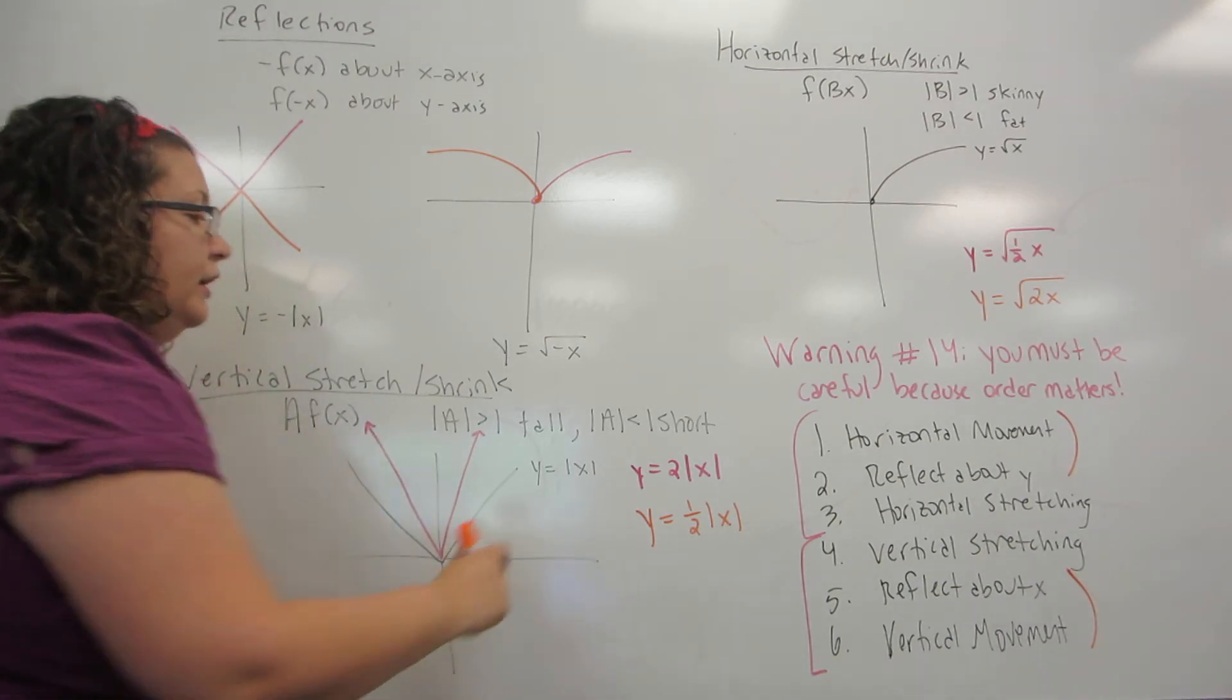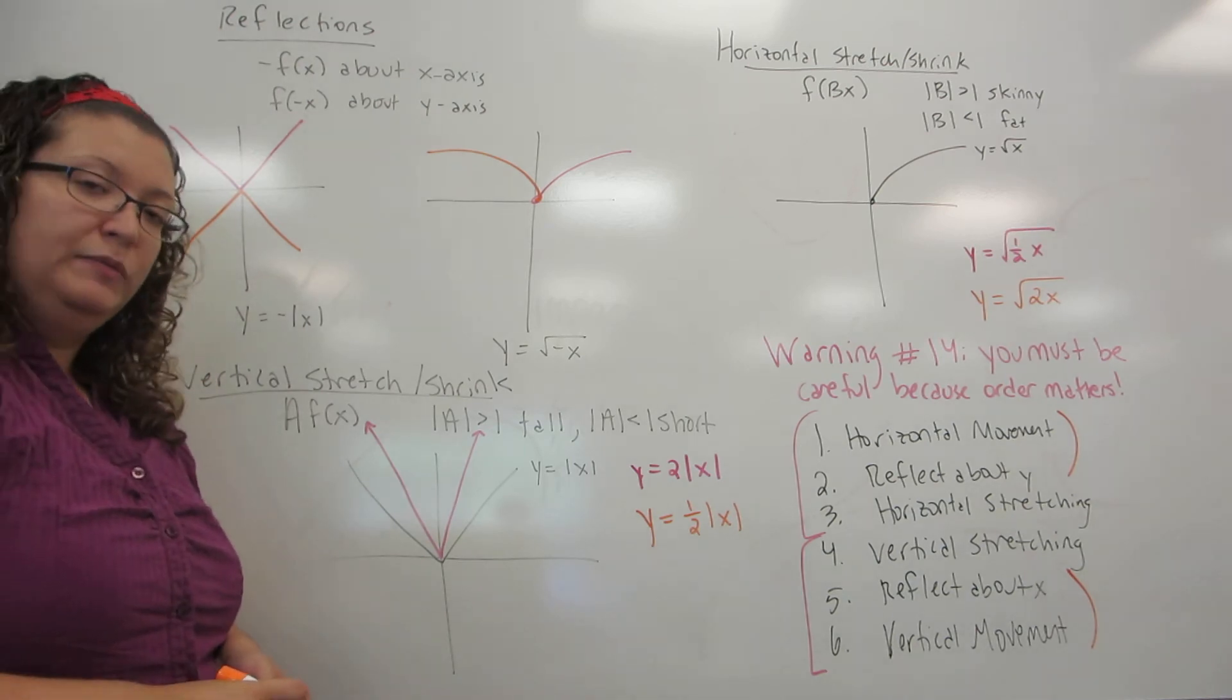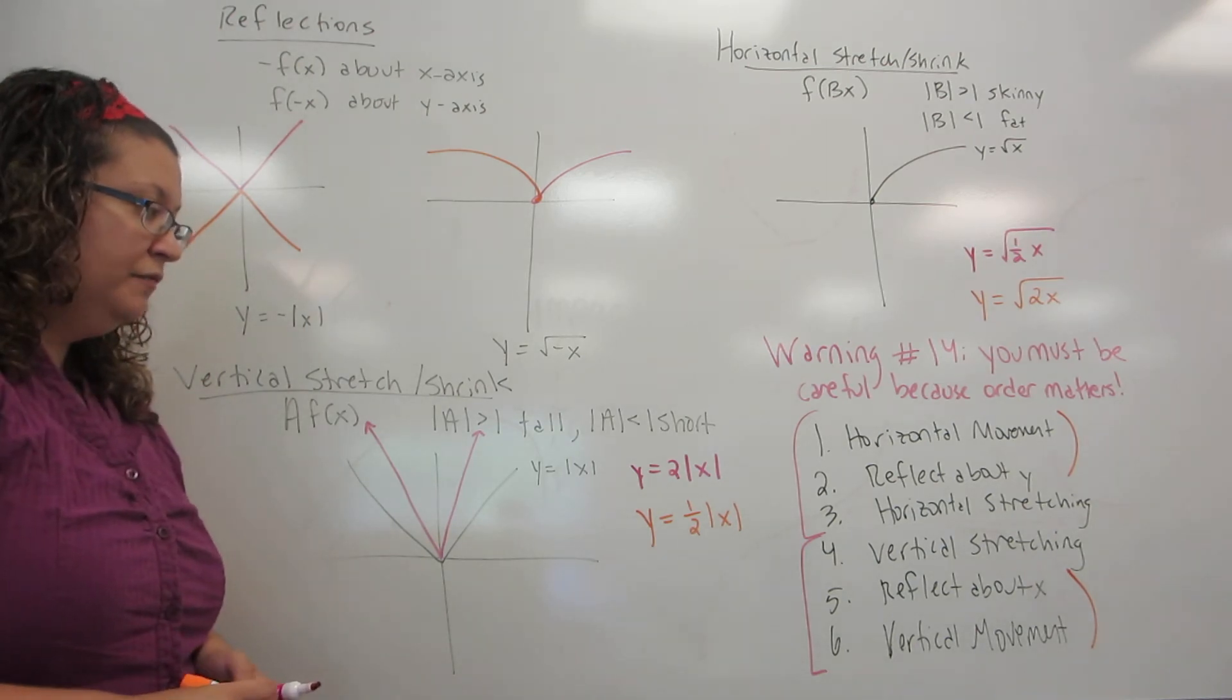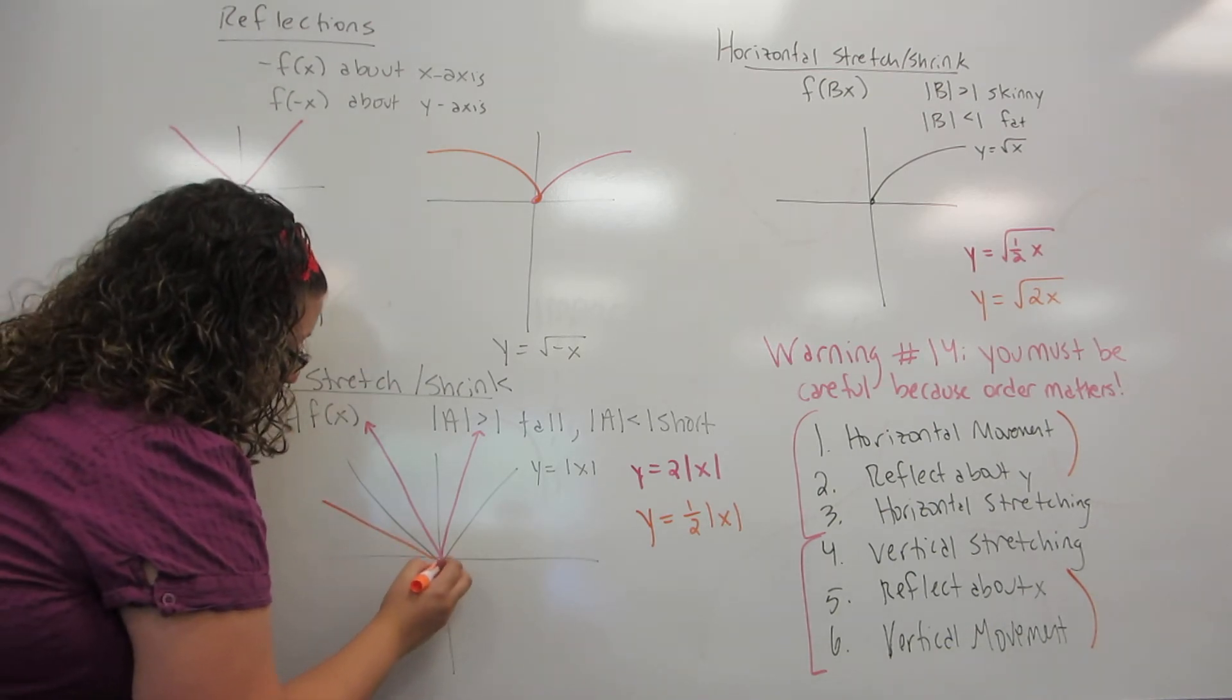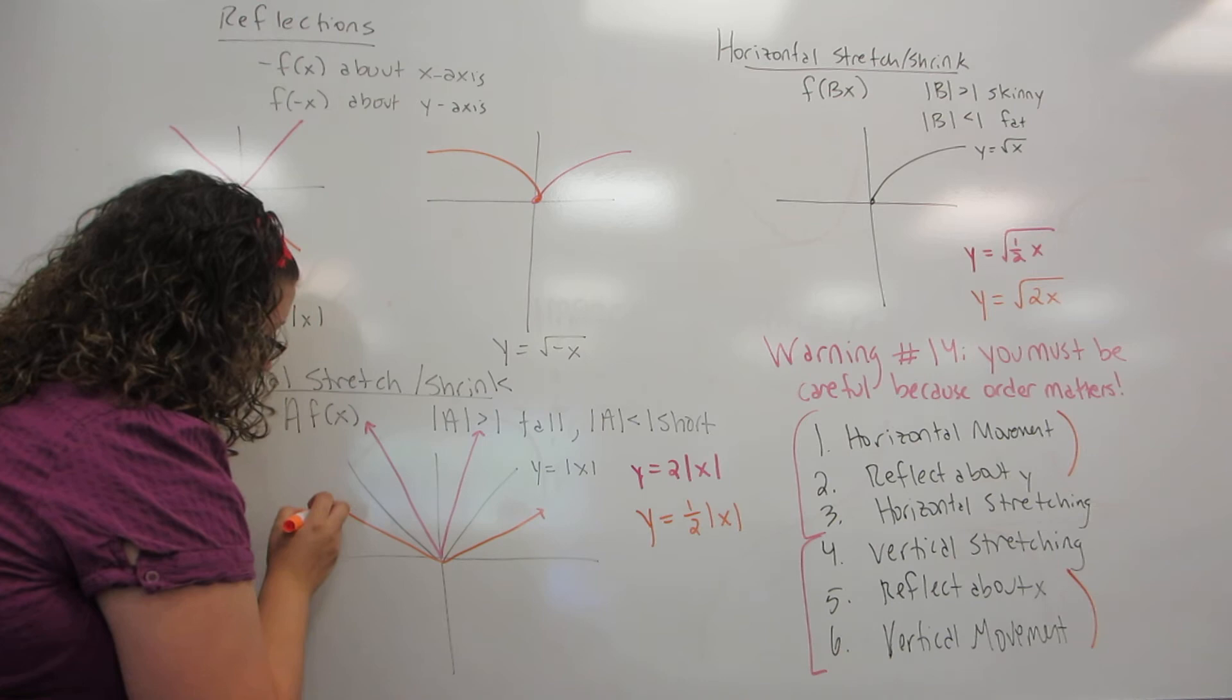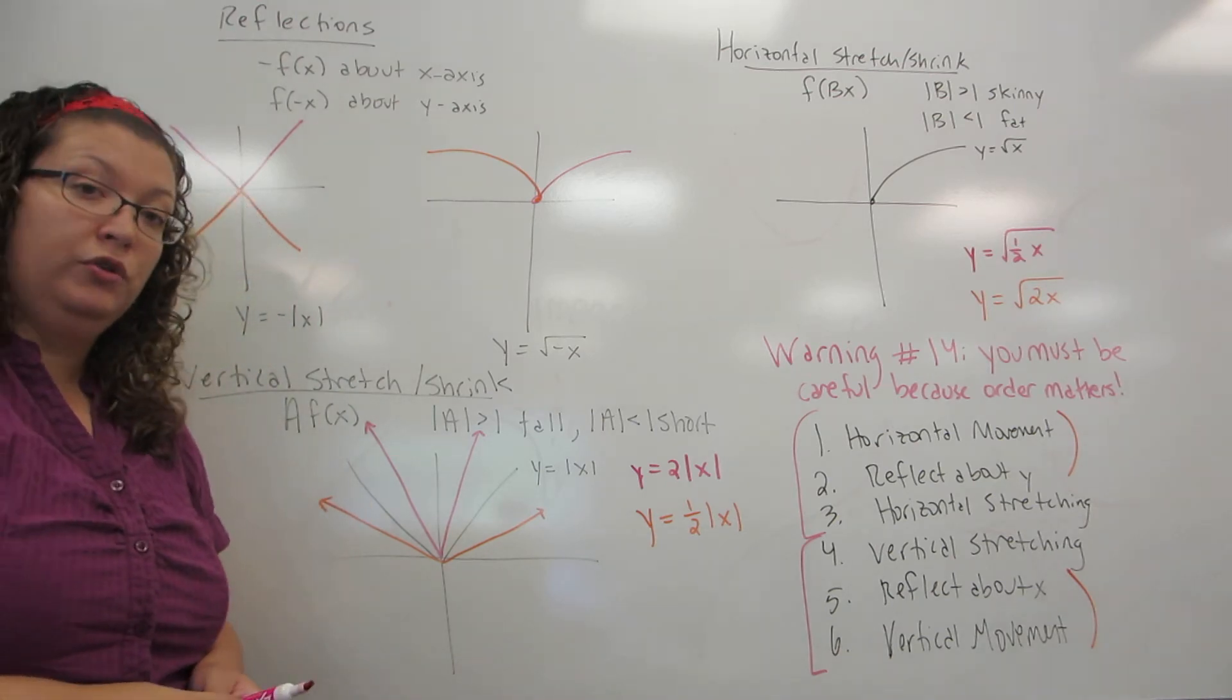Now, we look at one half the absolute value of x. Because one half is a small number, this has the effect of making it shorter by a factor of two. So the y-coordinate of every point is cut in half, and it becomes shorter.